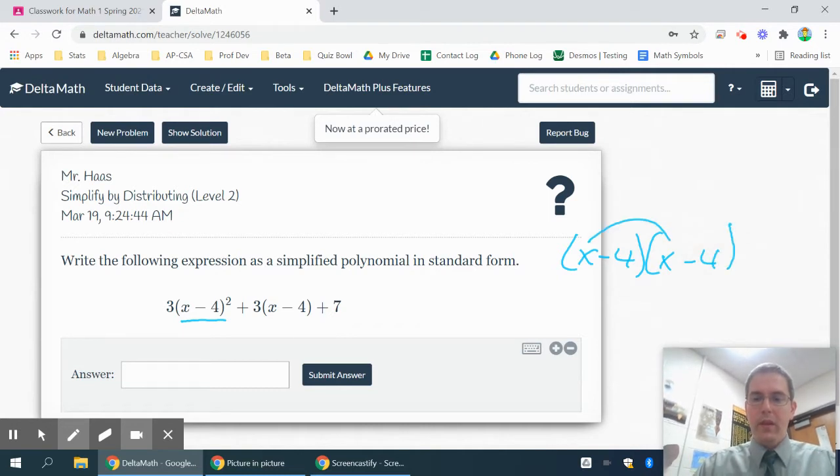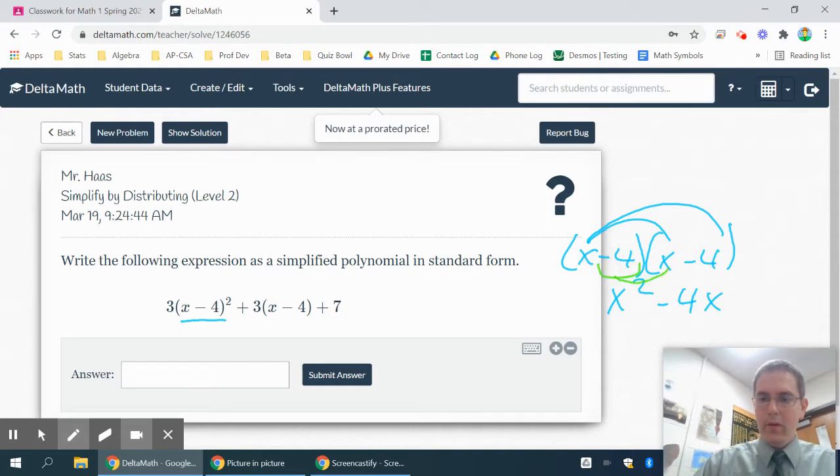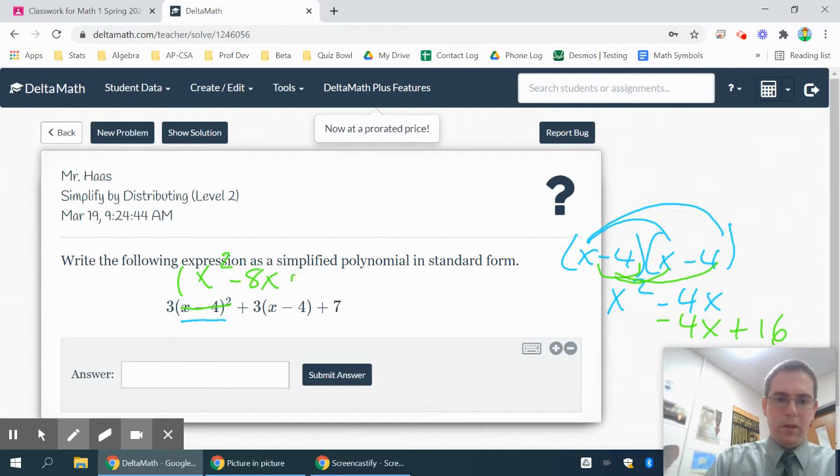So that's going to give me x squared and minus 4x. And then when I multiply that negative 4 through, that will give me another minus 4x, and then minus 4 times minus 4 is plus 16. So basically this thing here becomes x squared minus 8x plus 16.